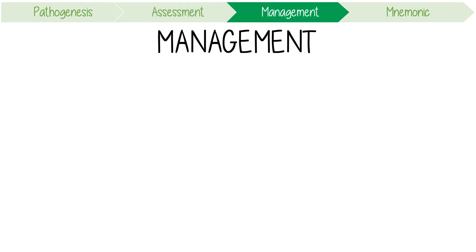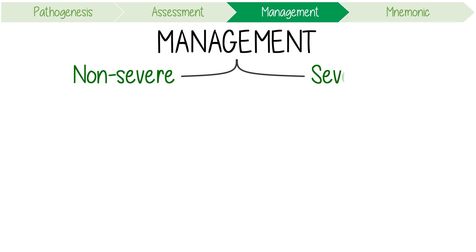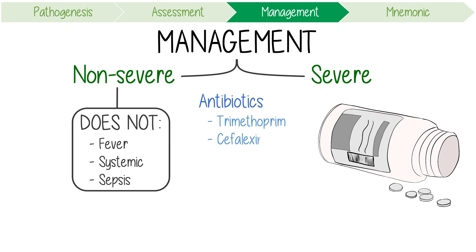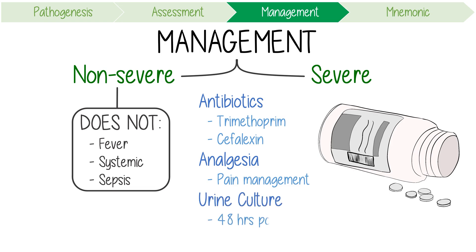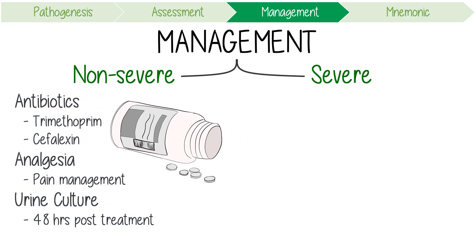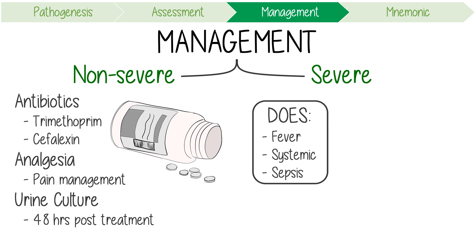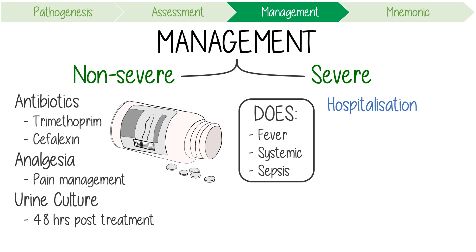To manage acute prostatitis, stratify patients into non-severe and severe. Cases are considered non-severe if the patient does not have fever, systemic features or sepsis — management should include empirical antibiotics like trimethoprim or cefalexin, and analgesia for pain management. A urine culture 48 hours post-treatment is important and especially useful when combined with clinical review. Severe cases — where the patient has fever, systemic features or sepsis — will likely require hospitalisation and empirical intravenous antibiotics, which might include gentamicin and amoxicillin.